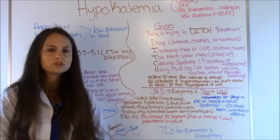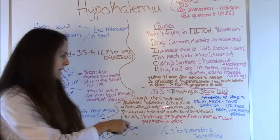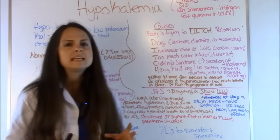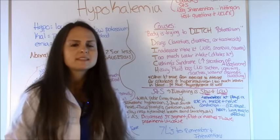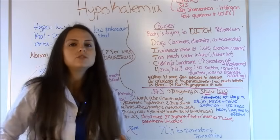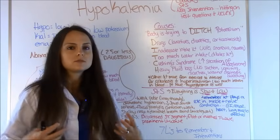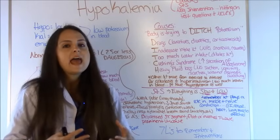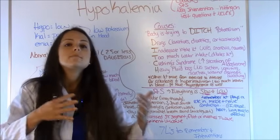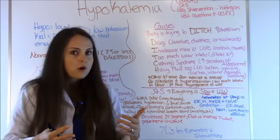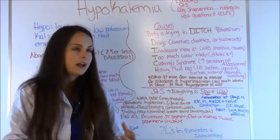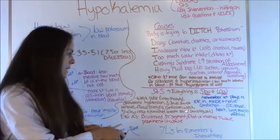Weakness, shallow respirations, and diminished breath sounds. This is because whenever you breathe, you use your muscles — your accessory muscles to breathe — and potassium is responsible in muscle movement and contractions. So if you don't have a lot of potassium, you're not going to be breathing as well and you're going to have diminished breath sounds.